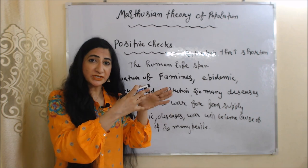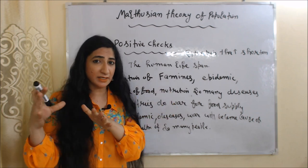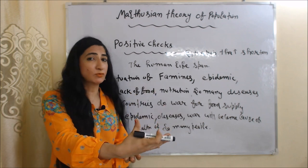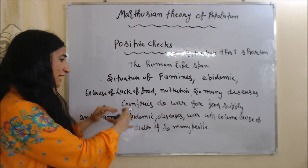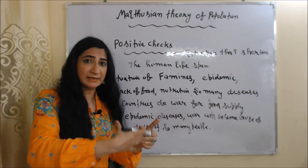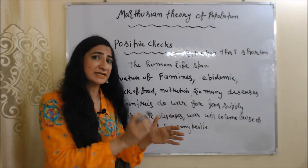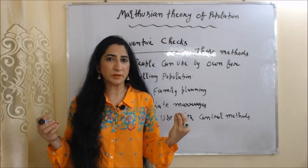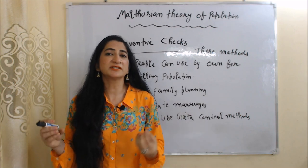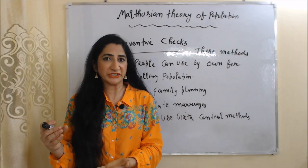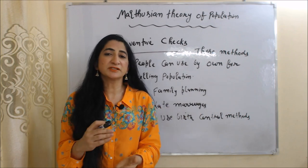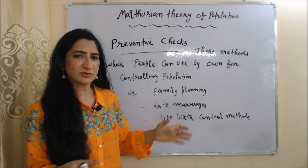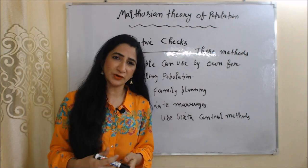Because of lack of food and nutrition, many diseases will spread. If people do not have food, countries start doing war to get food supply. Because of famines, epidemics, diseases, and war, many people die. When people are continuously dying, at a certain point food supply will become equal to population. Preventive checks are methods people can use on their own to control population, such as family planning, late marriages, or birth control methods.